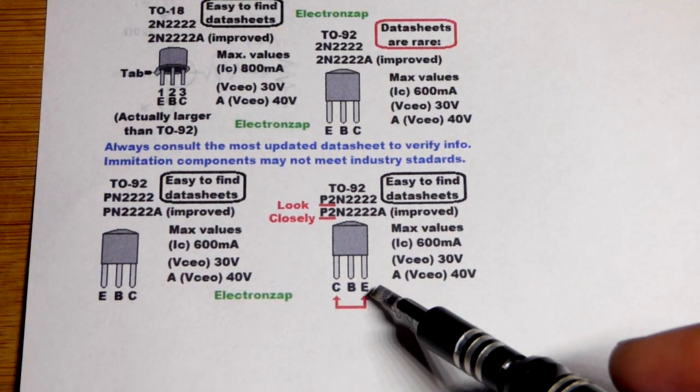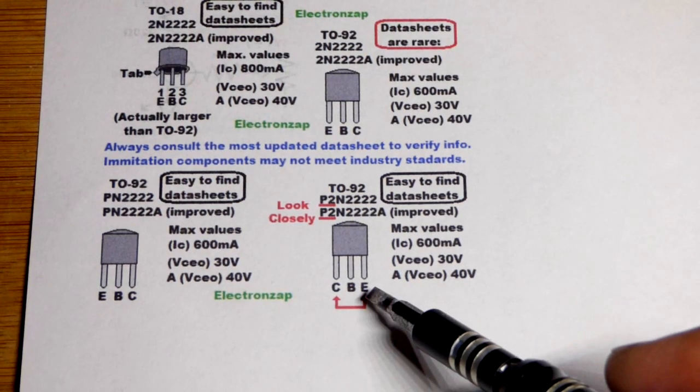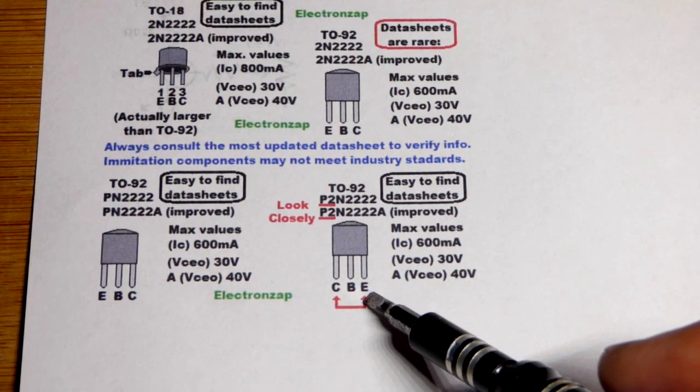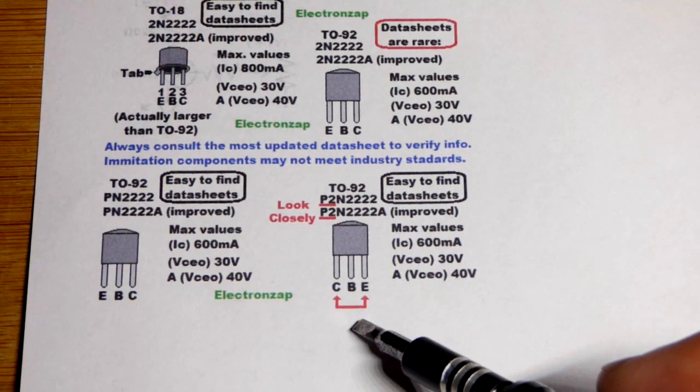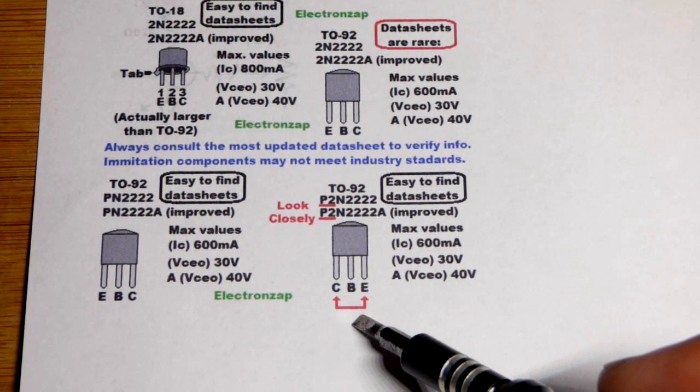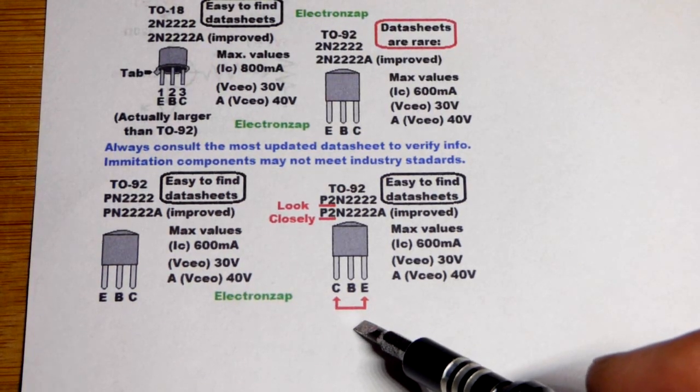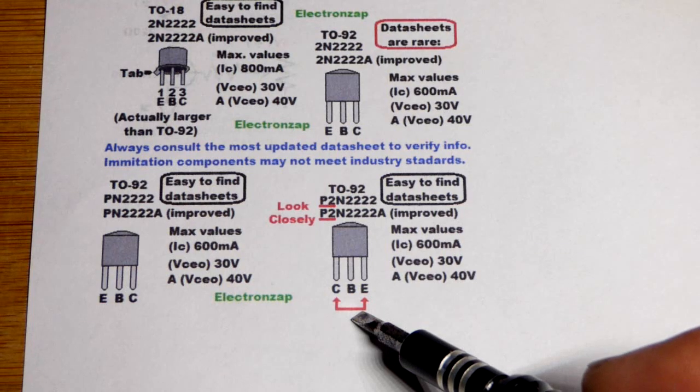So a lot of circuits will still work if the emitter and the collector are wired backwards. But especially at higher voltages, it's going to fail. And it may even fail and you might not notice it at lower voltages.